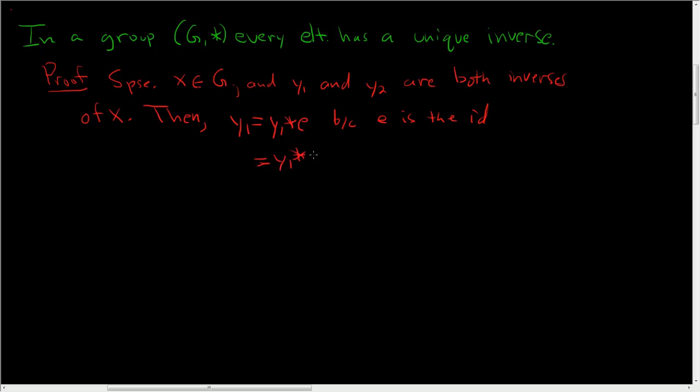So here we have y1 star. Now if I put y2 here, it's not really going to help because we'll get stuck, because then we have y1, y2. So what we'll do is we'll put x here, so that later we can star it with y to get e. So this is x star y2. And this is because y2 is the inverse of x.